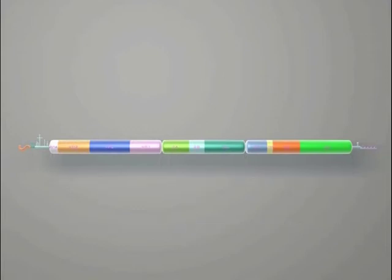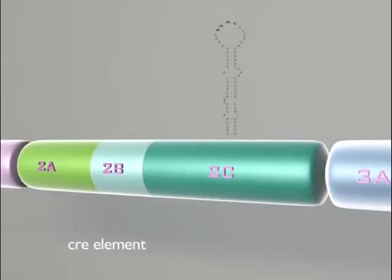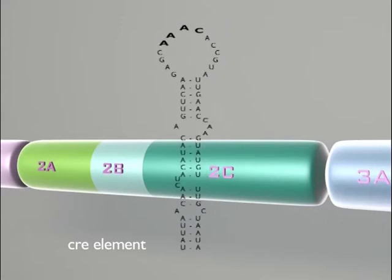Another important RNA structure worth looking at is found in the P2 region. This is a cis-acting replication element, or CRE for short, and it will play an important role during replication.